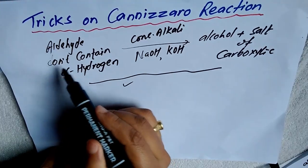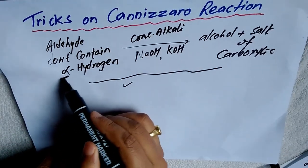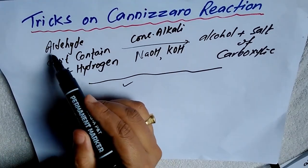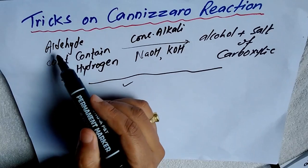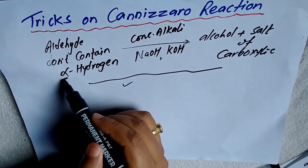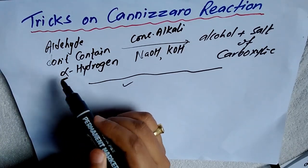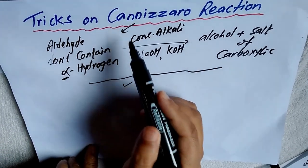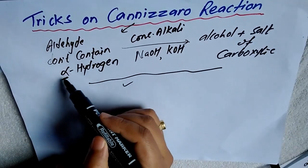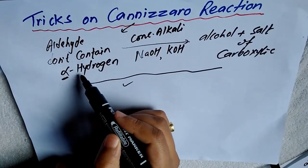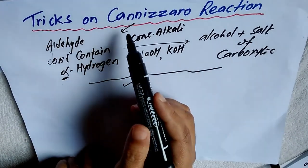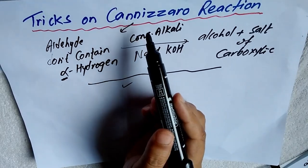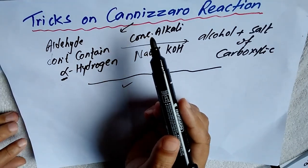So, the aldehyde must not contain alpha hydrogen — alpha hydrogen should be absent. If alpha hydrogen is present, it gives aldol condensation. For the Cannizzaro reaction, alpha hydrogen must be absent. So Cannizzaro and aldol condensation are opposite reactions.